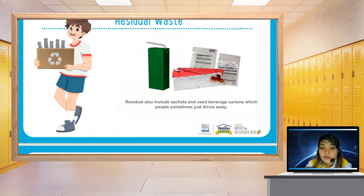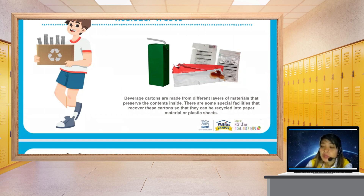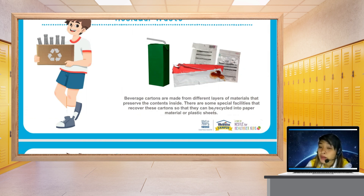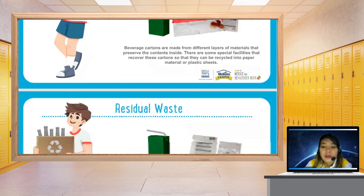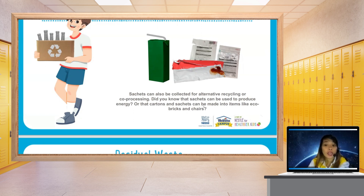Recyclables also include sachets and used beverage cartons, which people sometimes just throw away. Beverage cartons are made from different layers of materials that preserve the contents inside, like milk cartons. Some special facilities recover these cartons so they can be recycled into paper material or plastic sheets. Sachets can also be used to produce energy, or cartons and sachets can be made into items like ecobricks and chairs.